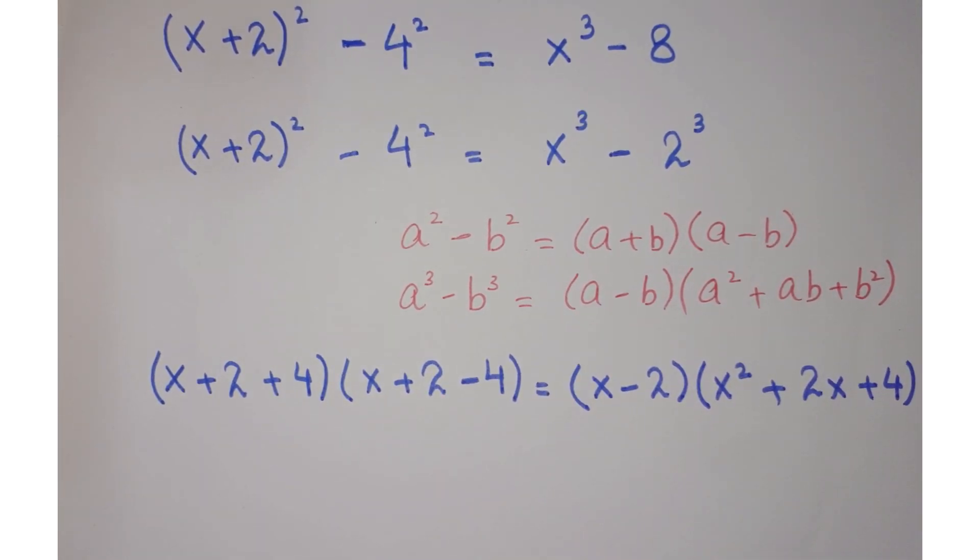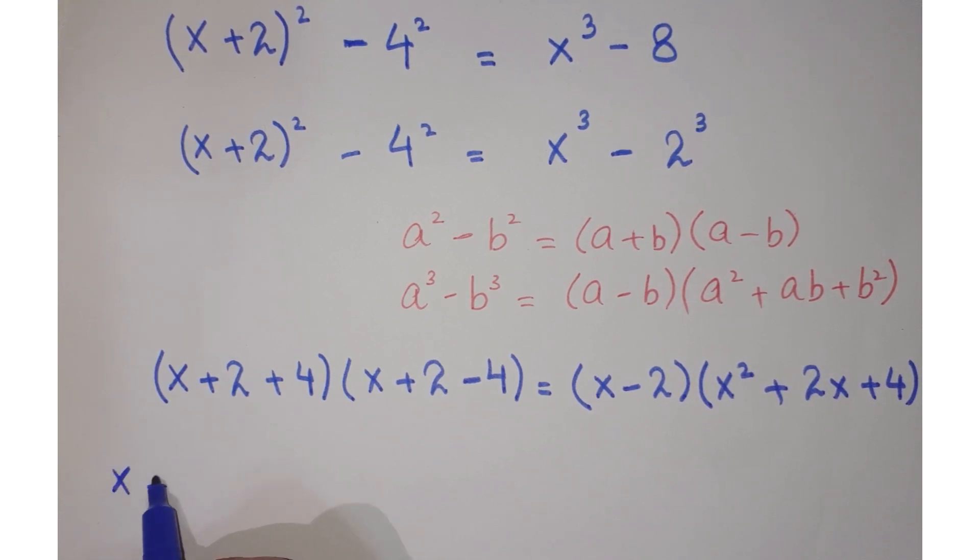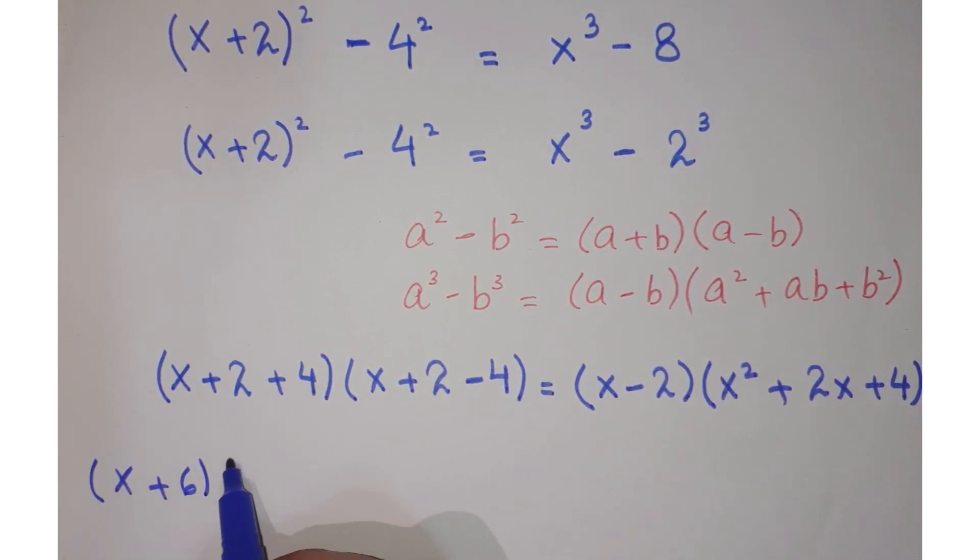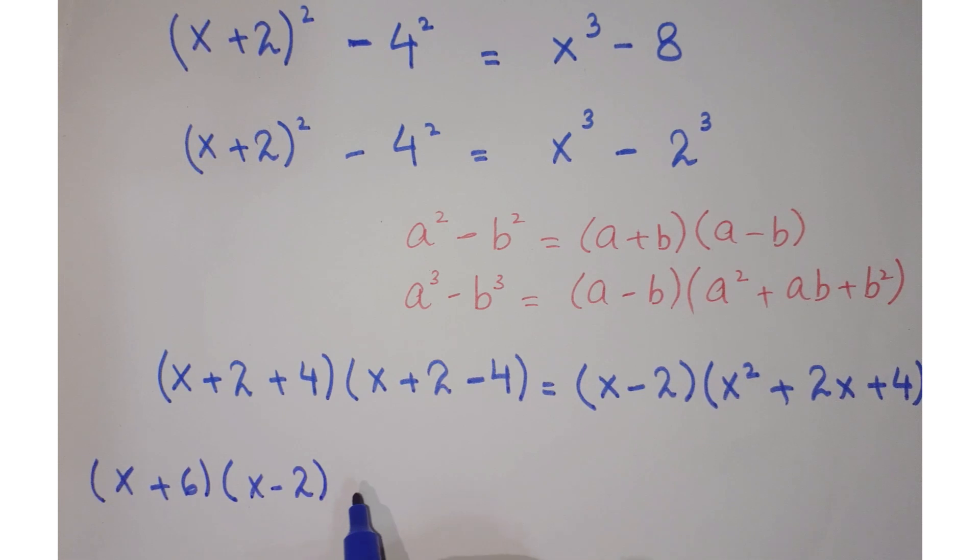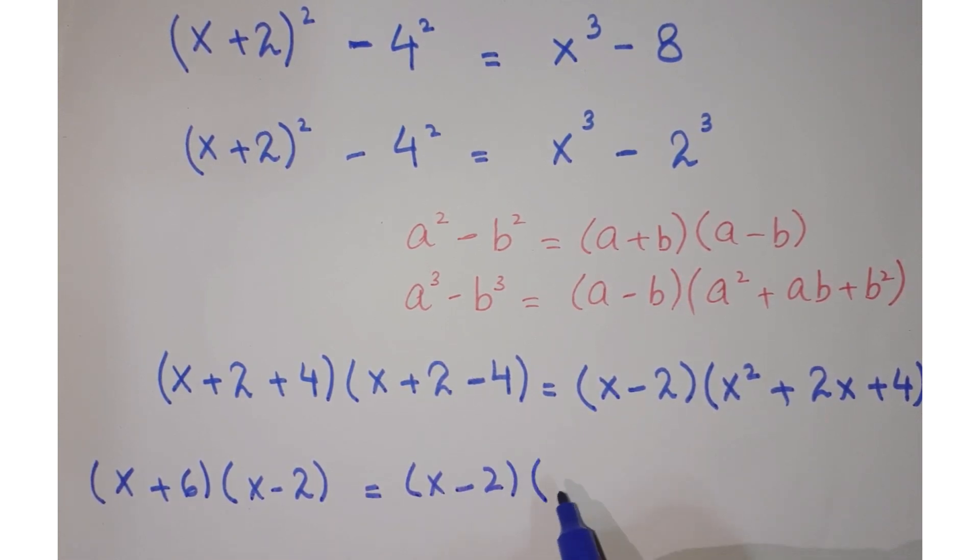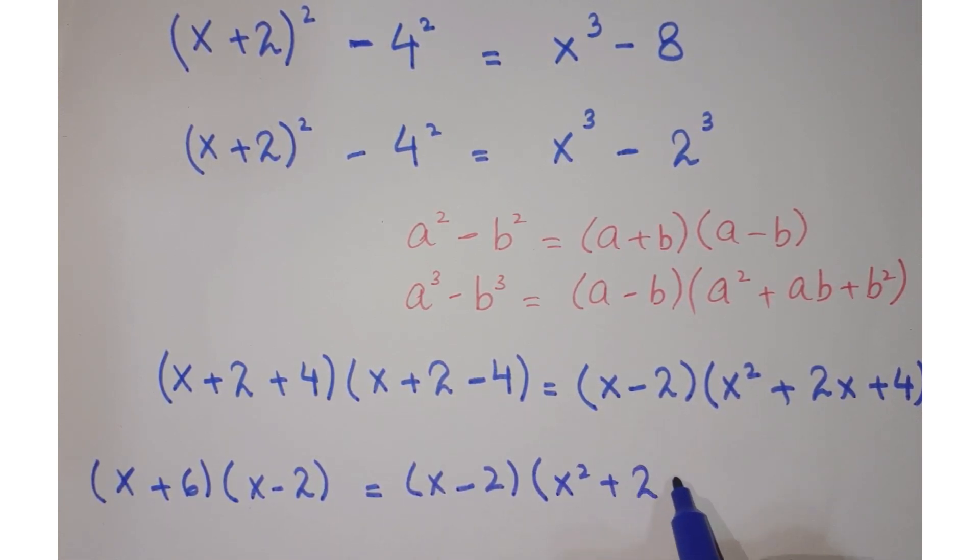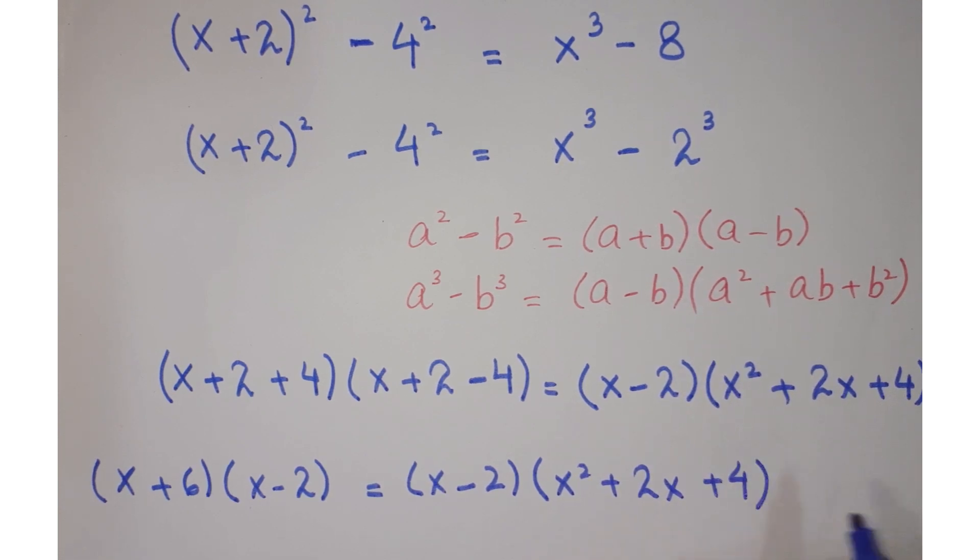Now simplify this. You get (x+6)(x-2) = (x-2)(x² + 2x + 4).